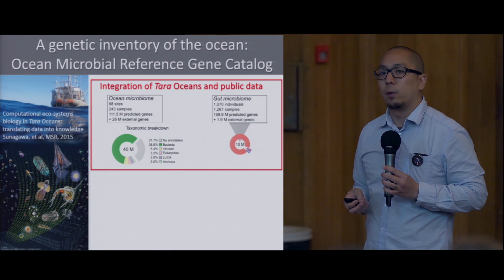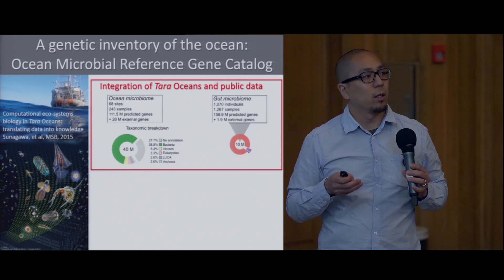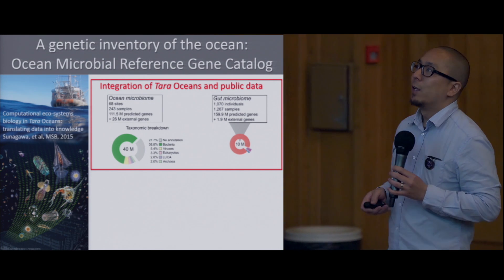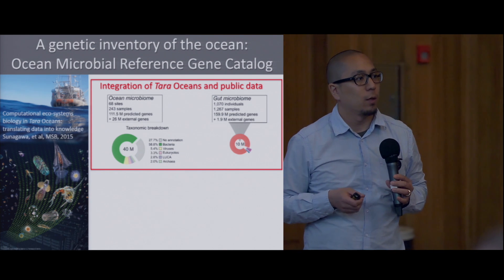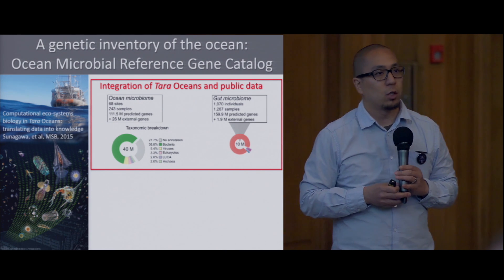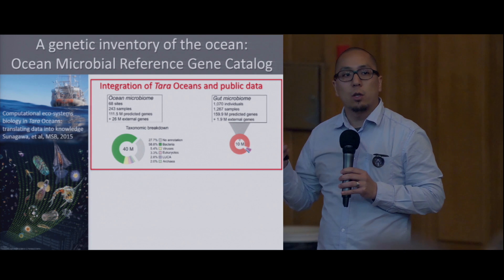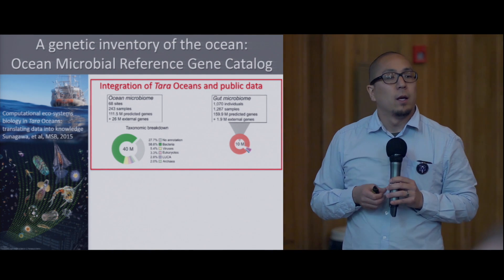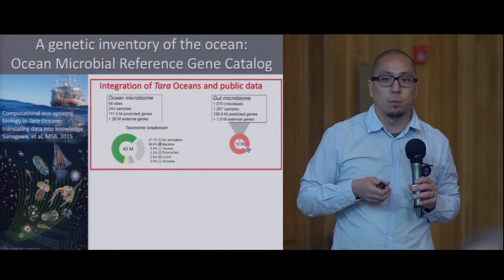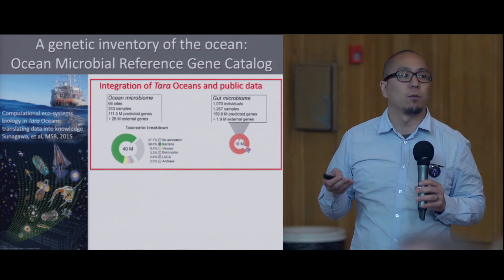What we did with the data is metagenomics. You take all the organisms, extract all the DNA, chop it into millions and billions of pieces, and then face the great challenge of putting the pieces back together. First you reconstruct the genomes of origin, then you predict what genes are on those genomes. What we did was establish an ocean microbial reference gene catalog — we used all genes predicted from all Tara samples and merged this with existing ocean microbial genome data to generate a non-redundant catalog that people can now use as a genetic inventory of the ocean.